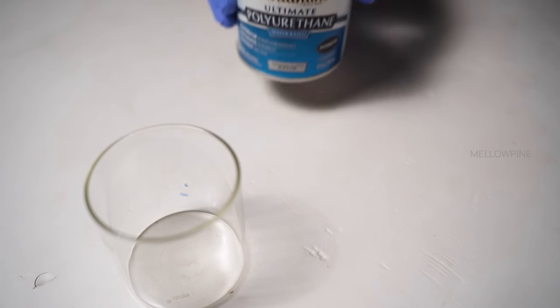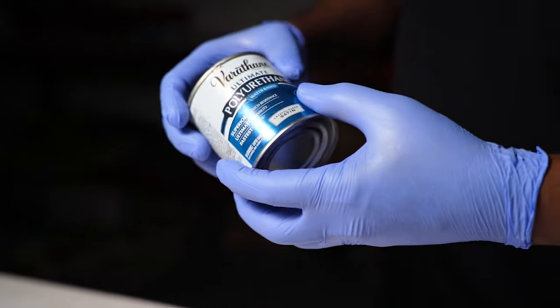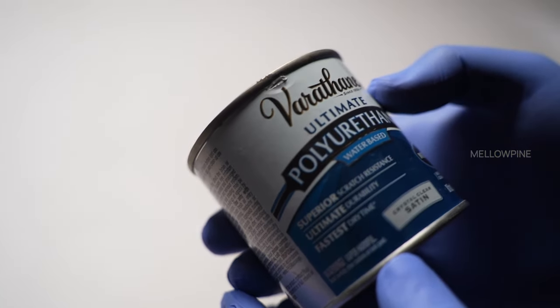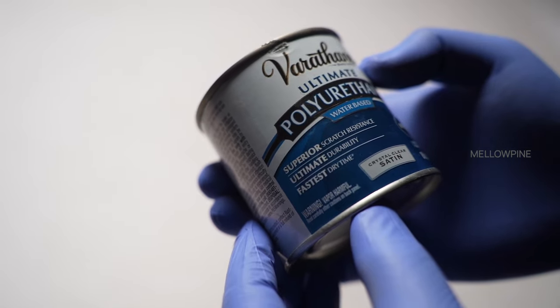First, choose the right polyurethane for your project. Using a water-based polyurethane is a good idea for spraying. It can be easily cleaned from the equipment compared to oil-based polyurethane which is harder to remove due to its oily nature.